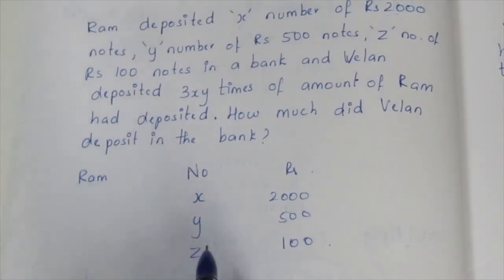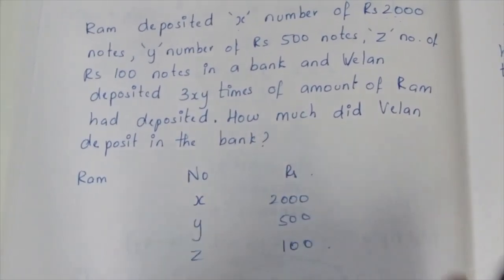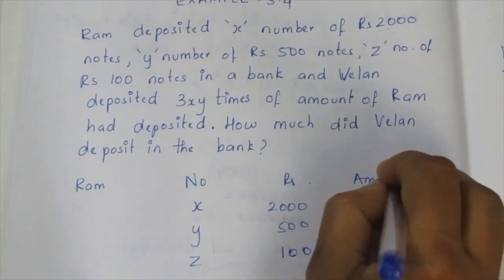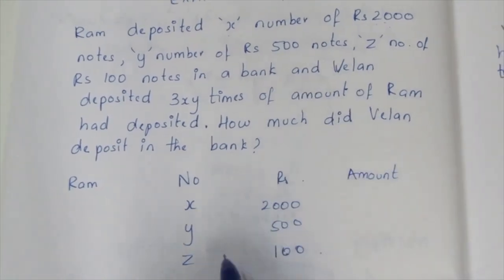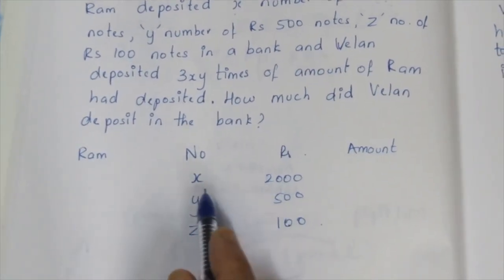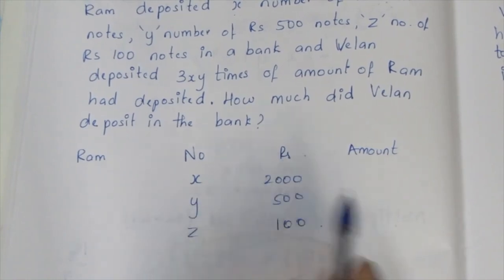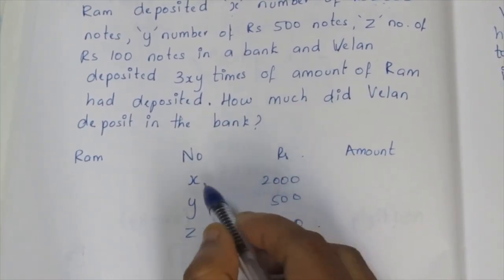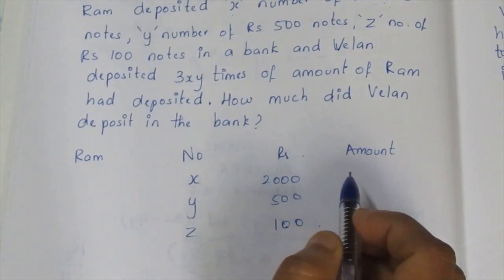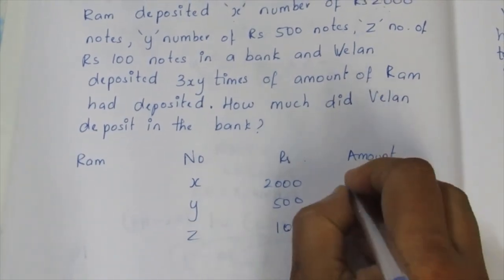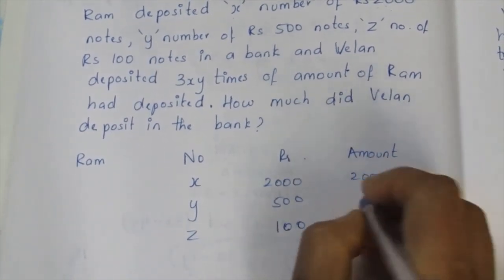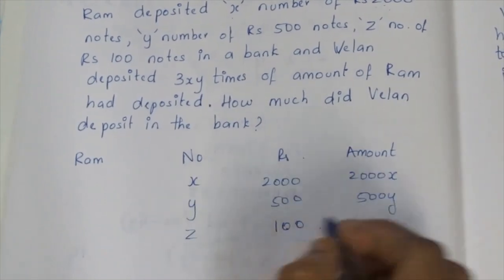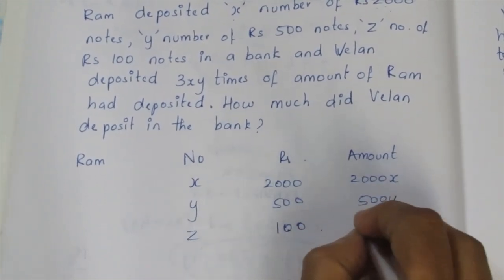So if we multiply the number of notes by their value, the total amount deposited by Ram is 2000X plus 500Y plus 100Z.